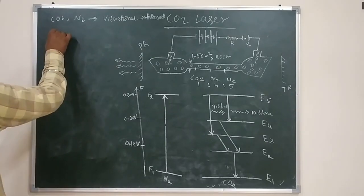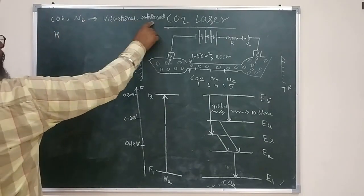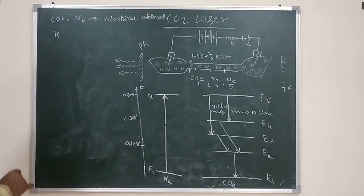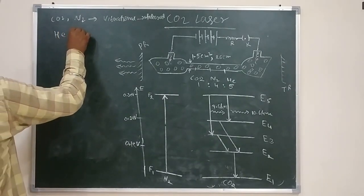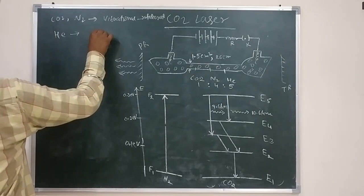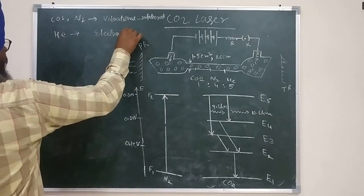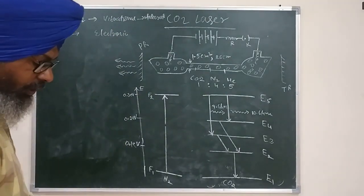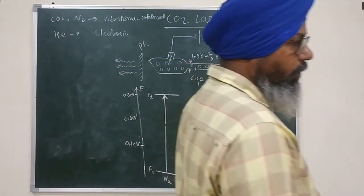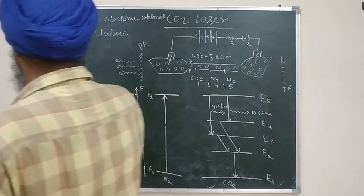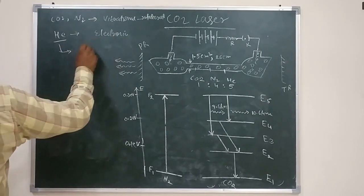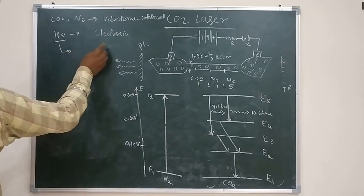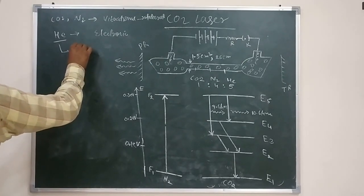CO2 and nitrogen have vibrational and rotational degrees of freedom in addition to electronic levels. Helium, being a monatomic gas, can only show electronic levels — so only electronic transitions can take place in helium. The degrees of freedom that helium can possess are only translational.